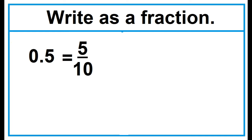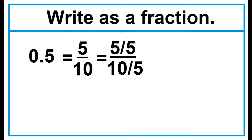But fractions are usually written in simplified form. To simplify, find a factor common to the numerator and the denominator. In this case, 5 is common. Divide the numerator by 5 and the denominator by 5. 5 divided by 5 is 1, and 10 divided by 5 is 2. So 0.5 is equal to 1 half.